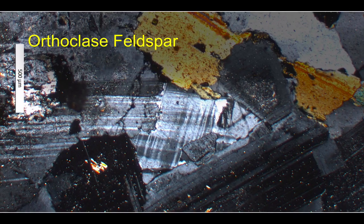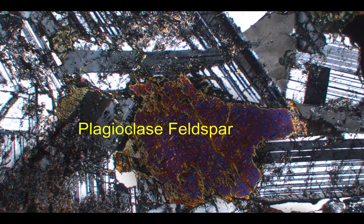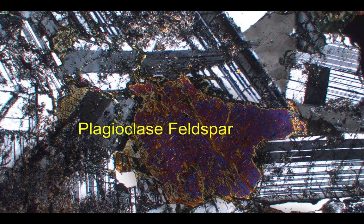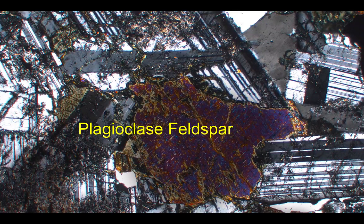We can't see any cleavage unfortunately, but that crosshatch pattern is quite distinctive. In plagioclase feldspar, which are the minerals around the edge of the screen, we can see that the pattern of black and white stripes — or grey and white stripes — is different. These are a bit simpler and a bit clearer. This is perhaps more distinctive of plagioclase feldspar, like in this gabbro, this igneous rock from the Lake District. Again, we can't see cleavage, but we can see this distinctive twinning of crystals.